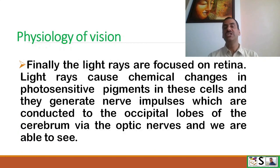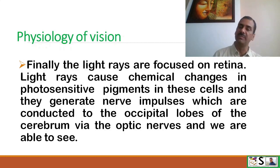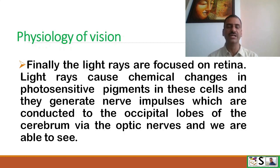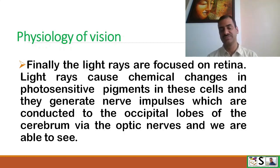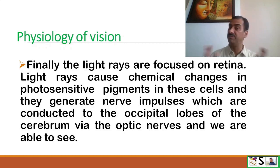Finally, the light rays focus on the retina. Light rays cause chemical changes in the photosensitive pigments in the cells of the retina, and they generate nerve impulses which are conducted to the occipital lobe of the cerebrum via the optic nerve, and we are able to see the object.